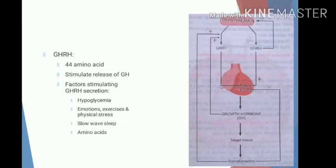The neurotransmitter involved in hypoglycemia-stimulated GHRH release is epinephrine. Emotions, exercise, and physical stress also increase growth hormone releasing hormone secretion. Low-wave sleep is also associated with an increase in GHRH, where the neurotransmitter is serotonin. Certain amino acids, importantly arginine, also increase GHRH secretion through alpha-adrenergic stimulation of receptors present in the neurons.